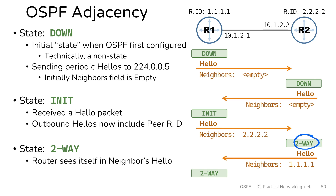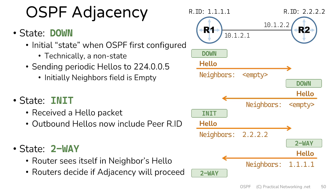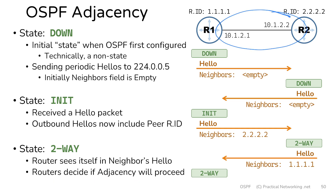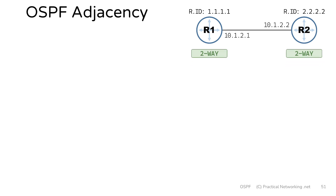At this point, both routers are in the two-way state, which means both routers have seen each other in each other's hello packets. They are now going to use the content of the hello packet to determine if the adjacency is going to proceed. Remember, there are six items that exist within the hello packets which must match for two routers to decide to continue with an adjacency — that's what they're going to be comparing at this point. There's also another element that goes into whether the adjacency will proceed, which we'll unpack when we explore the DR and BDR election process further later on in the series. For now, in our case, we're going to say they do decide to proceed.